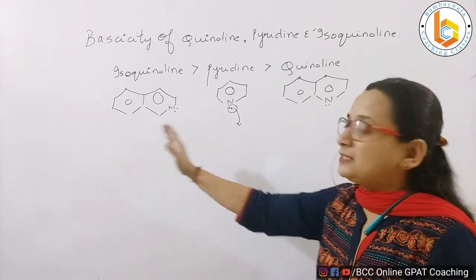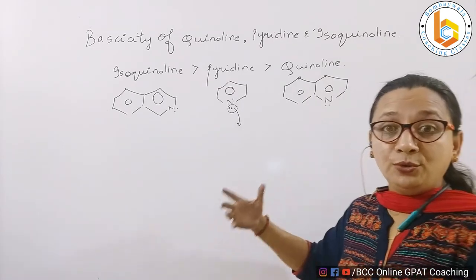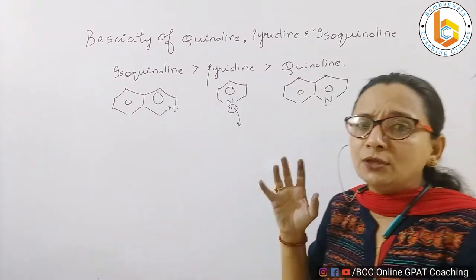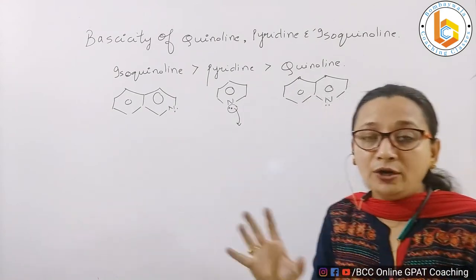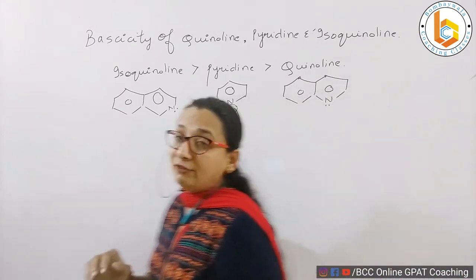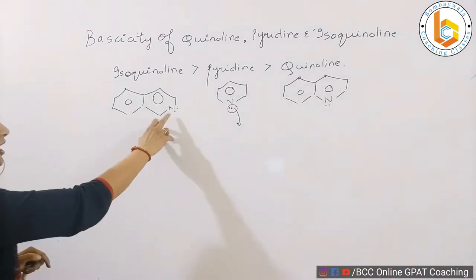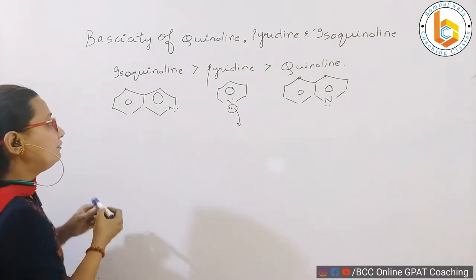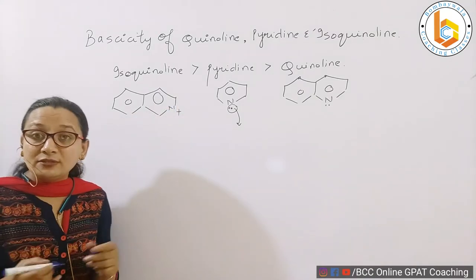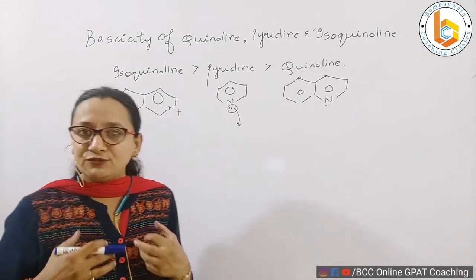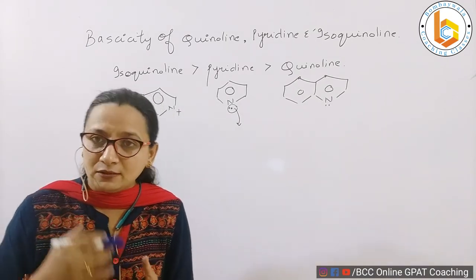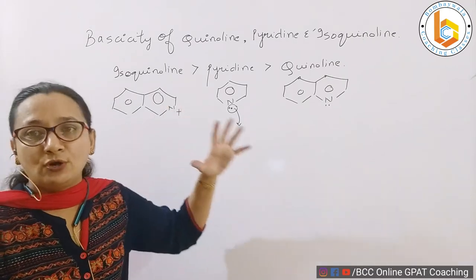Then what is the difference between them? What has made isoquinoline a stronger base than pyridine? The reason is about what happens when isoquinoline donates its electrons — it forms a salt. Just like ammonia donates its electrons and forms ammonium chloride, isoquinoline will similarly form a salt such as isoquinoline chloride.